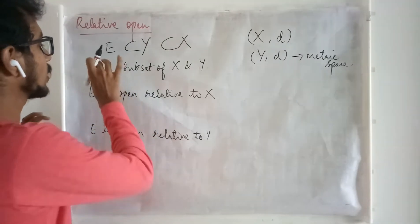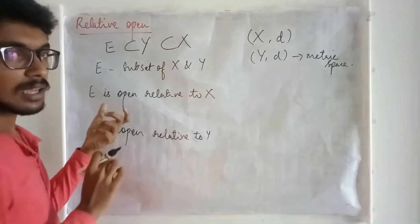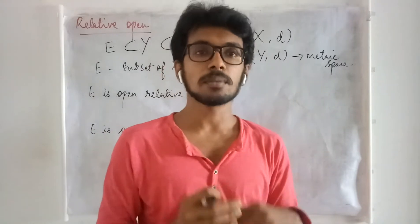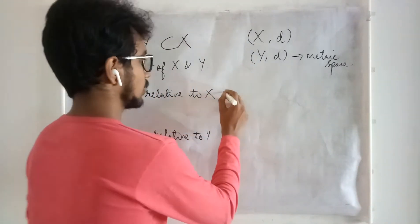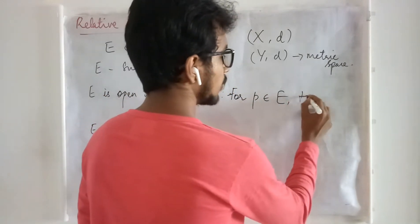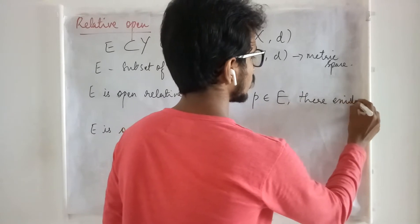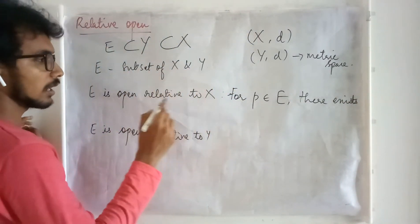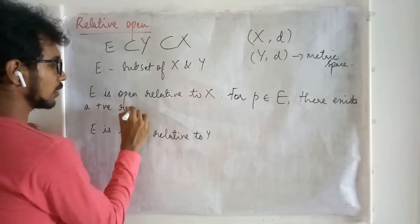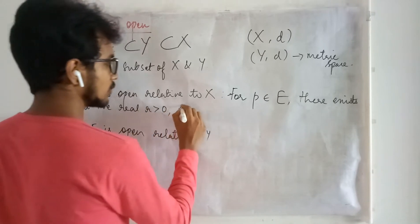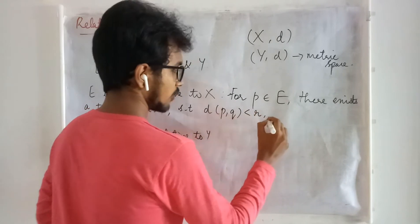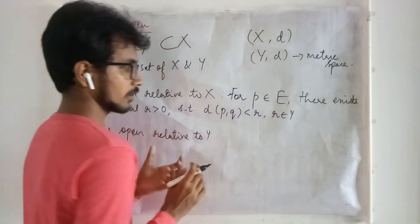Whenever we say E is open in Y — that can also be said as E is open relative to Y. When is that going to happen? Every point must be an interior point. Which means for whatever point I take in E, I must be able to identify a neighborhood. So in order to identify a neighborhood, we need a radius — there exists a positive real R.